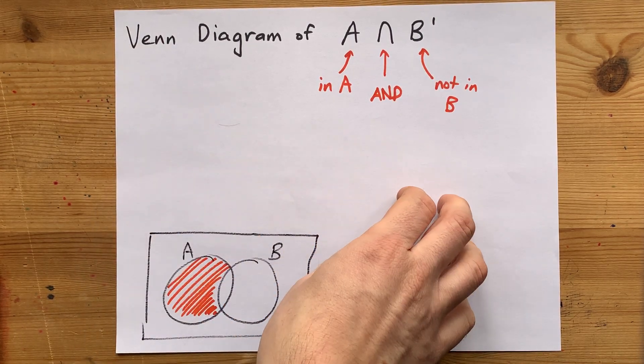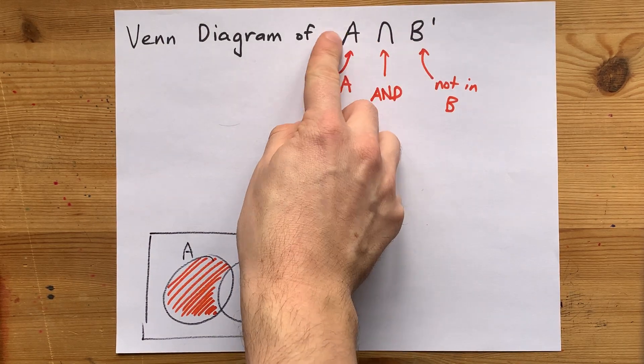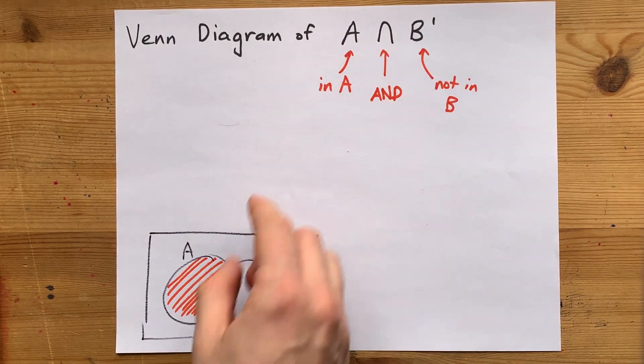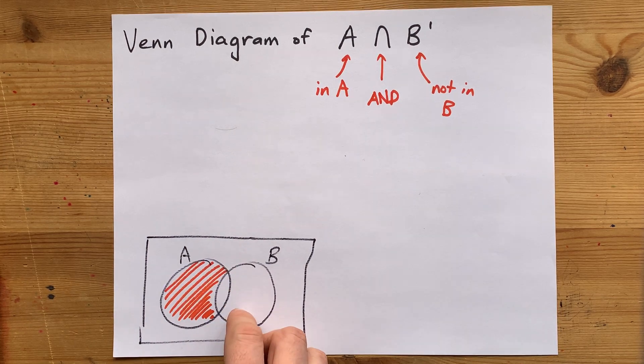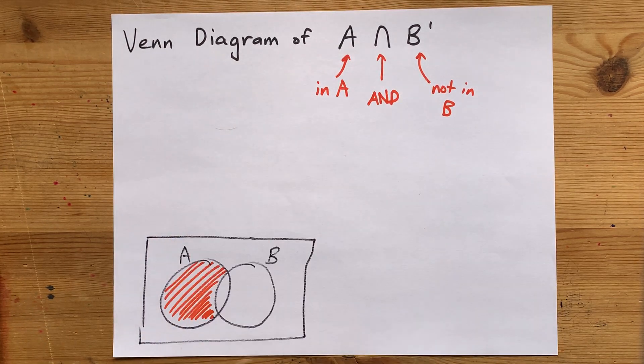Cool. That's your Venn diagram. Once you understand what each of these symbols mean, and once you can think about each of these individual areas on your own, you'll have the confidence to draw your own.